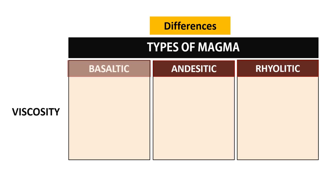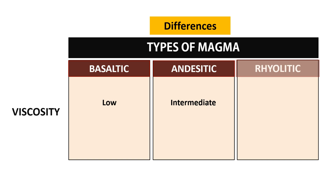Basaltic magma has low viscosity. On the other hand, the viscosity of andesitic magma is intermediate between basaltic and rhyolitic magmas. Rhyolitic magma has the highest viscosity.